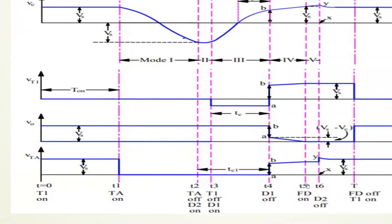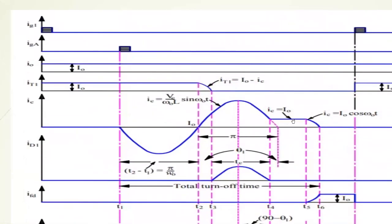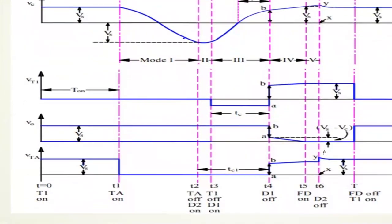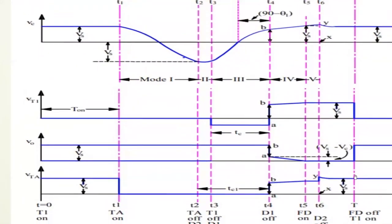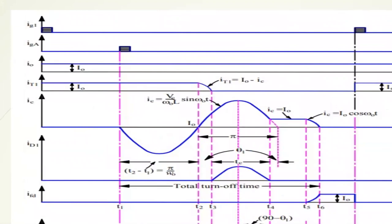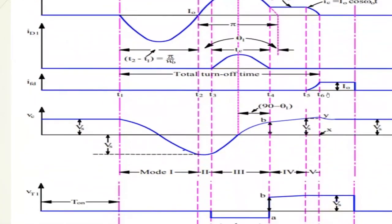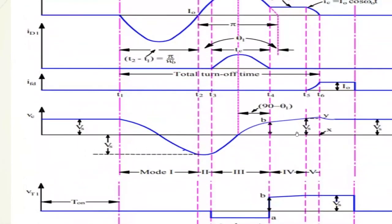The load now starts discharging through the freewheeling diode at instant T5. The freewheeling diode turns on and I0 slowly flows through it while IC becomes zero. IC becomes zero at instant T6, and after that the I0 current continues flowing until the load is completely discharged, at which point I0 becomes zero and the freewheeling diode current also becomes zero. This completes the operation of the current commutated chopper.